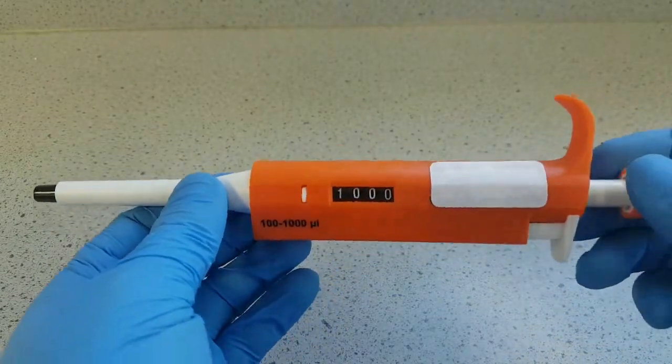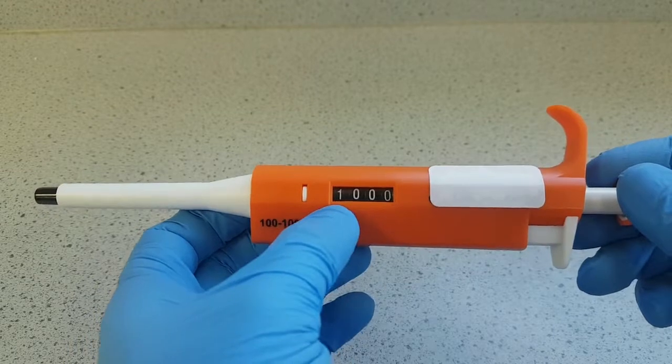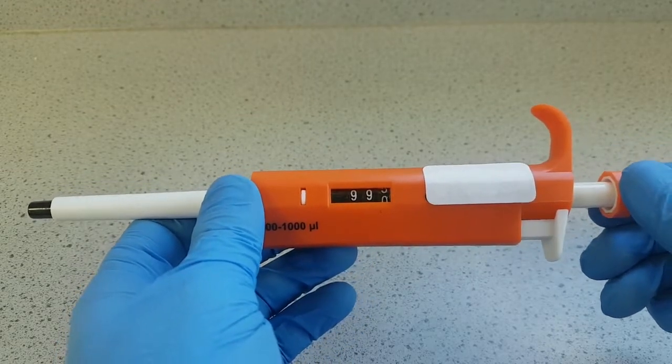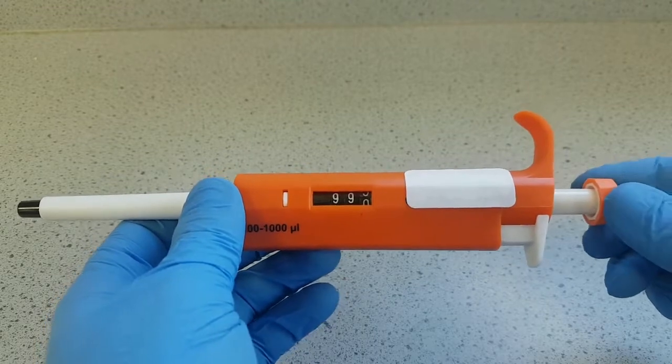On the side of the pipette you'll see a display window, which is currently set to 1000 microlitres, but you can adjust the volume by rotating the control knob here.